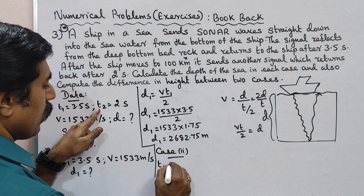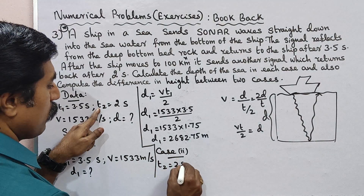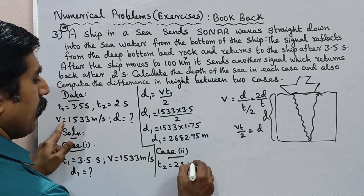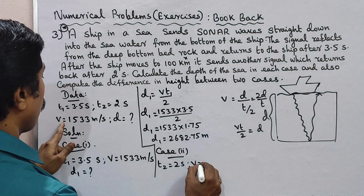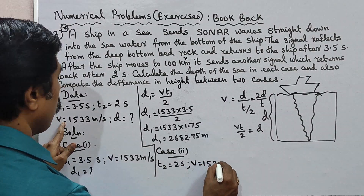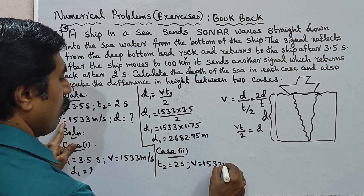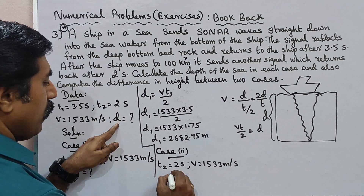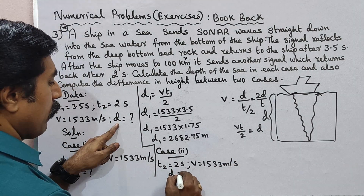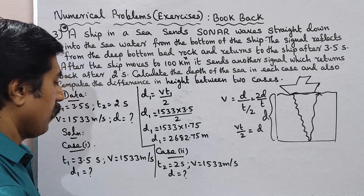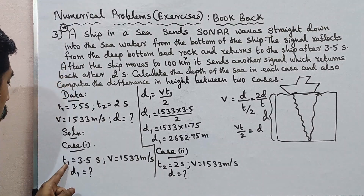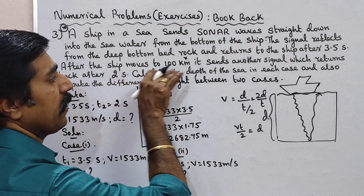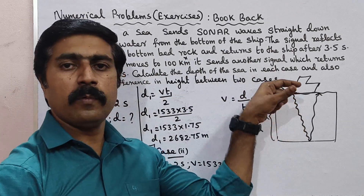Case 2: time t2 is equal to 2 seconds. Speed v is equal to 1533 meter per second. Calculate depth d2. After the ship moves 100 km, using the same formula d equals v times t divided by 2.